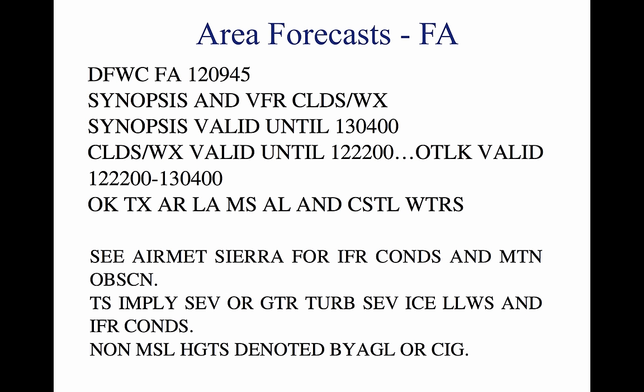2. Precautionary statements — IFR conditions, mountain obscurations, and thunderstorm hazards are described in this section. Statements regarding height are given in MSL; if given otherwise, AGL or ceiling (CIG) will be noted. 3. Synopsis — gives a brief summary identifying the location and movement of pressure systems, fronts, and circulation patterns. 4. VFR clouds and weather — this section lists expected sky conditions, visibility, and weather for the next 12 hours, and an outlook for the following six hours.